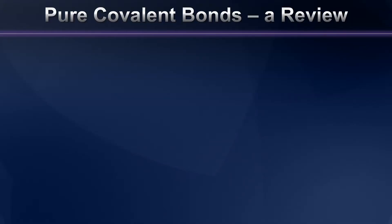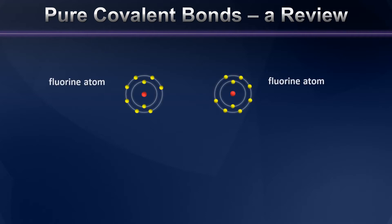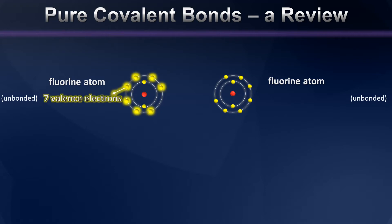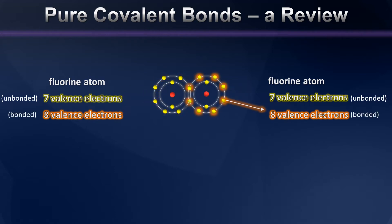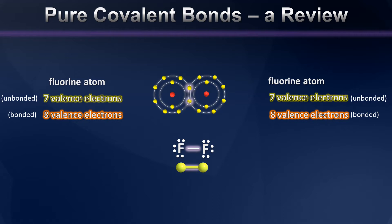Now if you haven't seen my original video on pure covalent bonds, you may want to watch that now, but here's a quick summary. When we have two atoms that nearly have a complete valence shell, like fluorine for example, where each has seven, these two atoms can get close enough together that they begin to share valence electrons, fooling one another into thinking they have an octet. The number of electrons shared tells us something about how many covalent bonds are holding that particular molecule together, but in our example we used two of the exact same kind of atom, so what happens when the atoms are different?